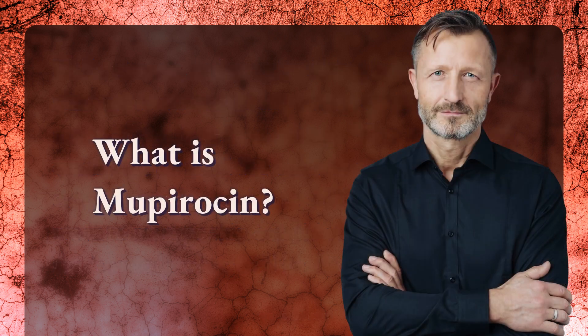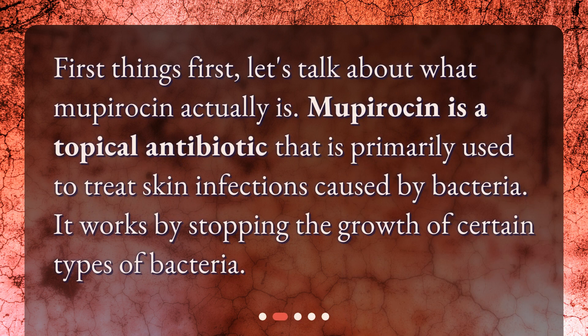What is Mupiracin? First things first, let's talk about what Mupiracin actually is. Mupiracin is a topical antibiotic that is primarily used to treat skin infections caused by bacteria. It works by stopping the growth of certain types of bacteria.